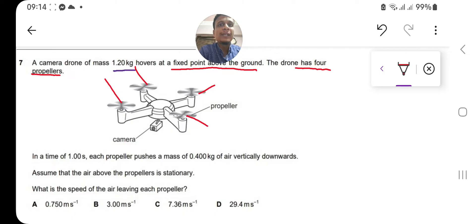In a time of one second, each propeller pushes a mass of 0.4 kg of air vertically downward. In order to overcome the weight of the drone, we need some unbalanced force in the opposite direction of the weight, meaning towards the upside.